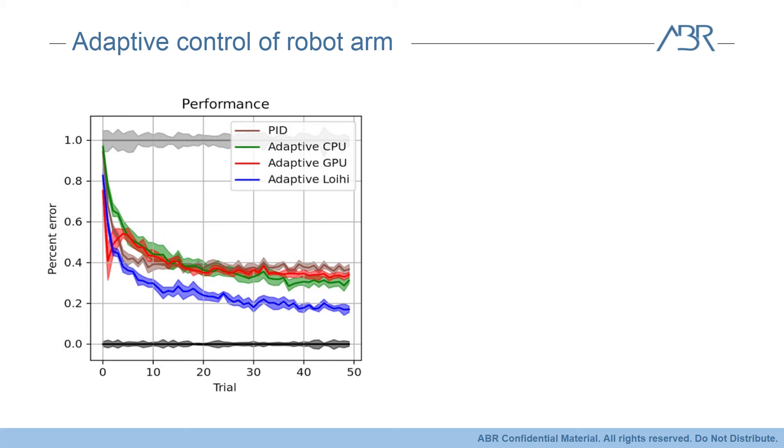Then, the brown line is the performance of a PID controller, and the non-linear adaptive control implemented on the CPU, GPU, and Loihi are the green, red, and blue lines, respectively. So, what we're seeing here is that the neuromorphic adaptive control is reducing the error during reaching to half of that achieved by the integrated error and adaptive implementations running on standard hardware.